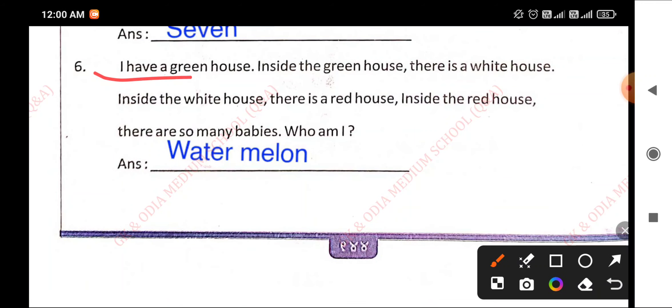Number 6: I have a green house. Inside the green house there is a white house. Inside the white house there is a red house. Inside the red house there are so many babies. Who am I? Answer is watermelon.